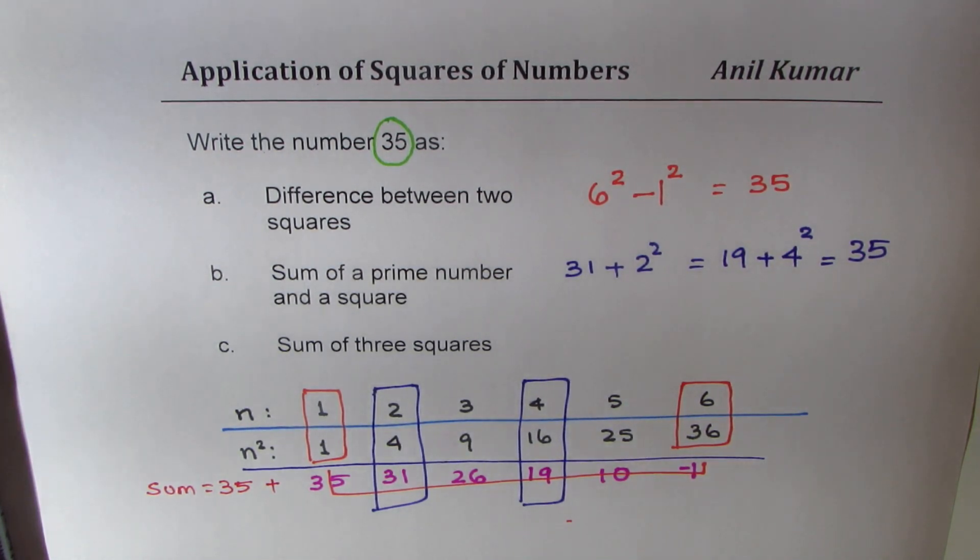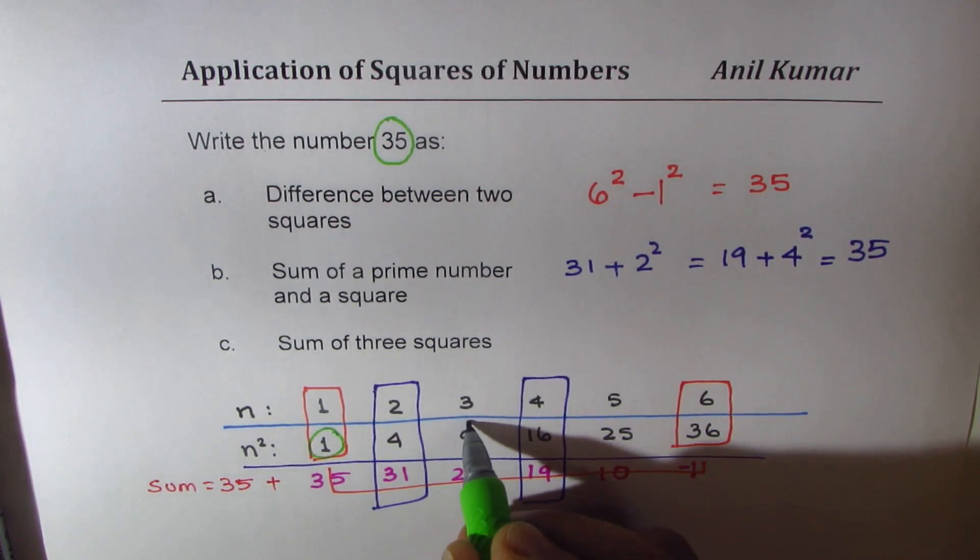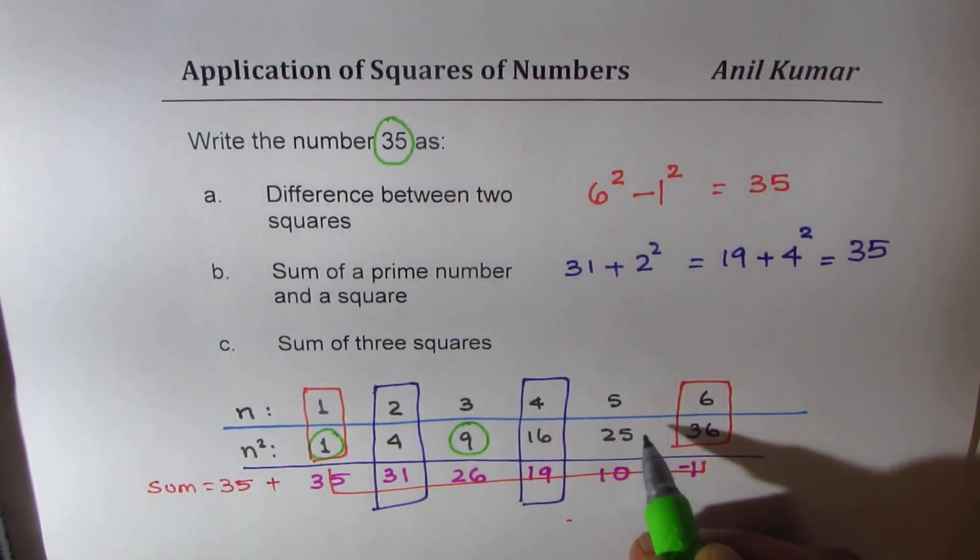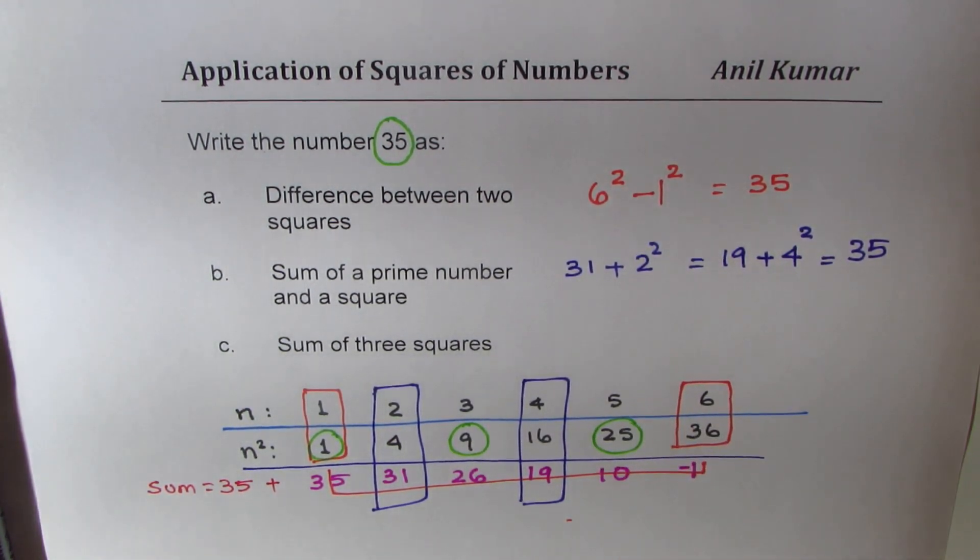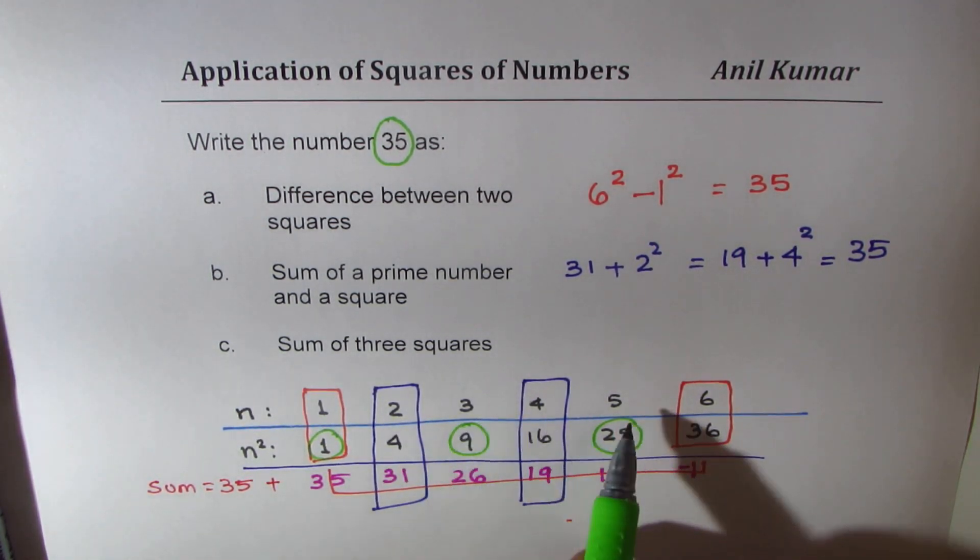Straight away, what you could do is you could add these three numbers. 1 plus 9 is 10 and 10 plus 25 is 35. That means, we are looking into squares of 1, 3 and 5.